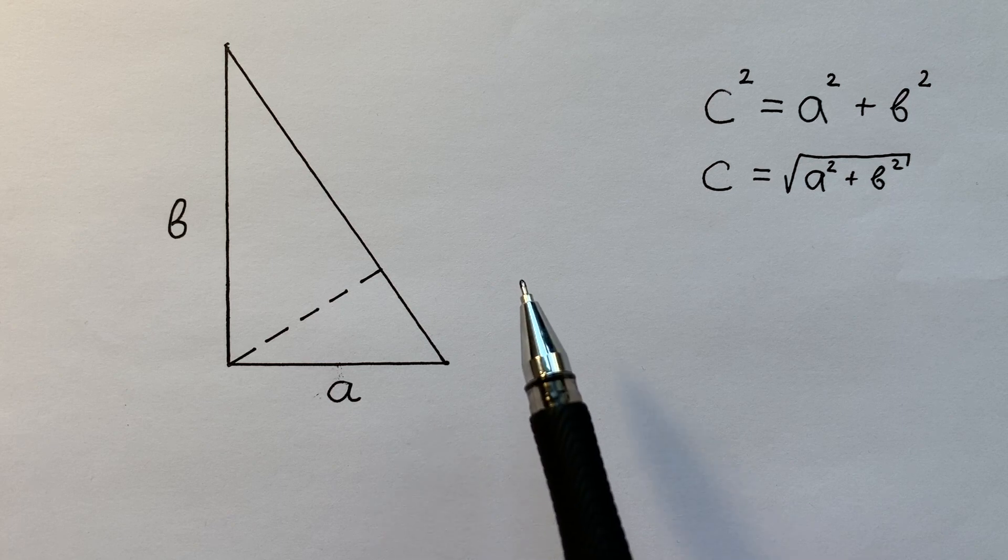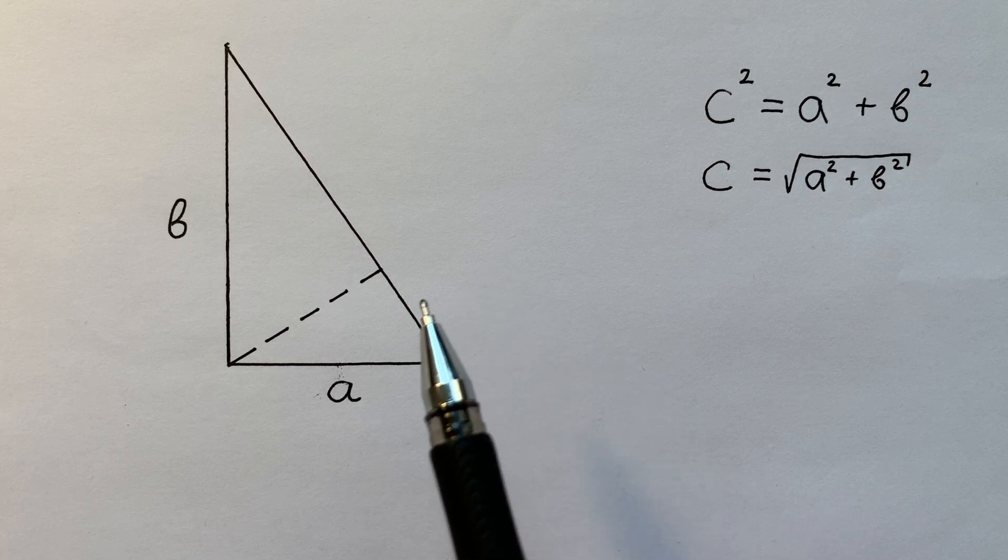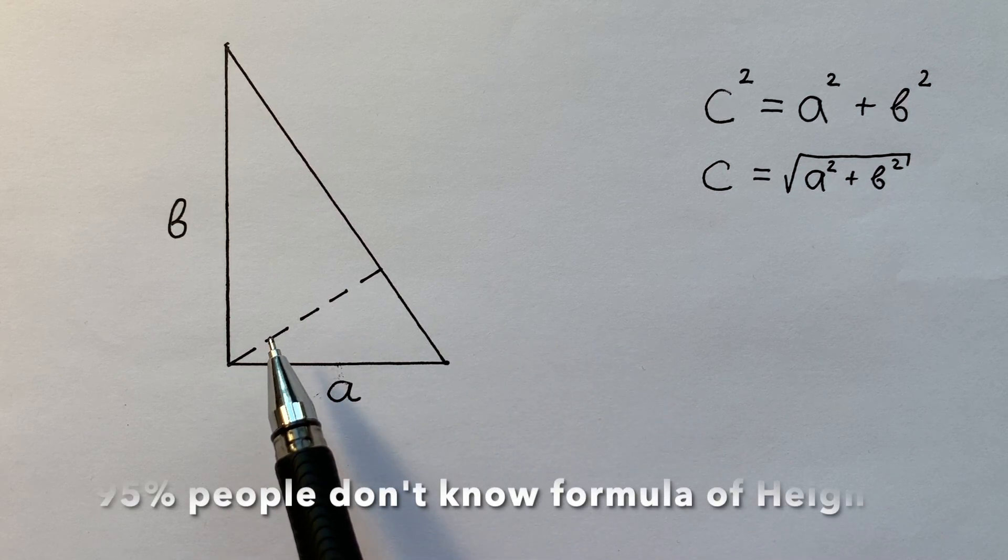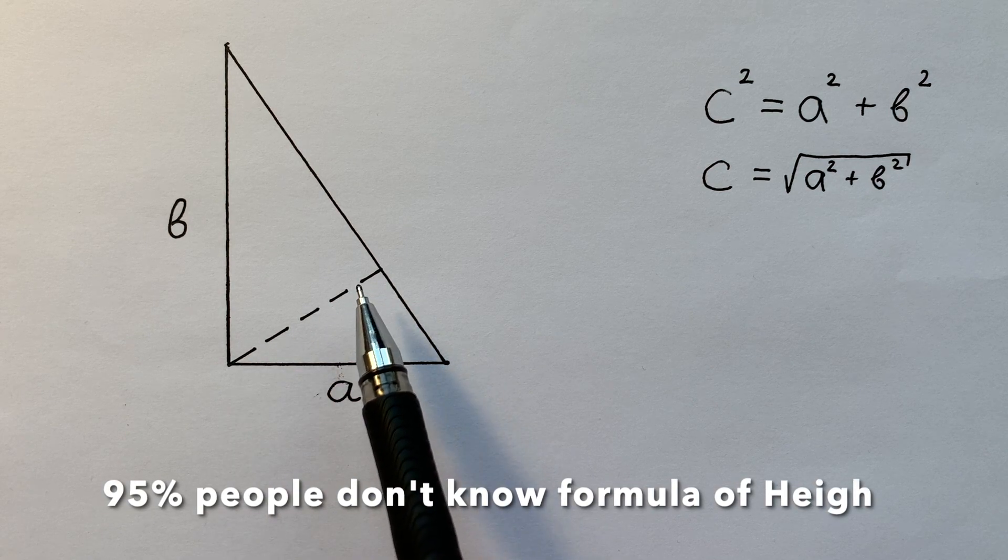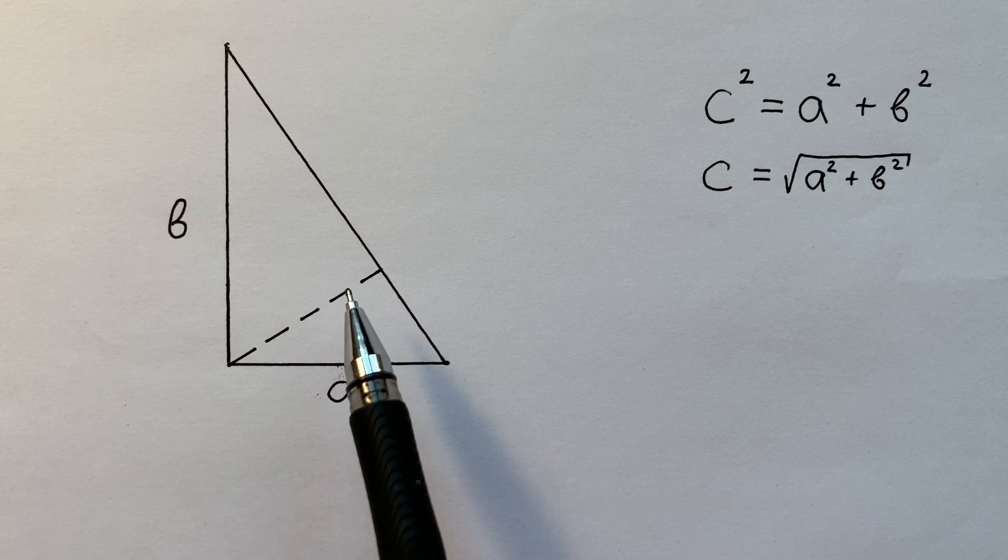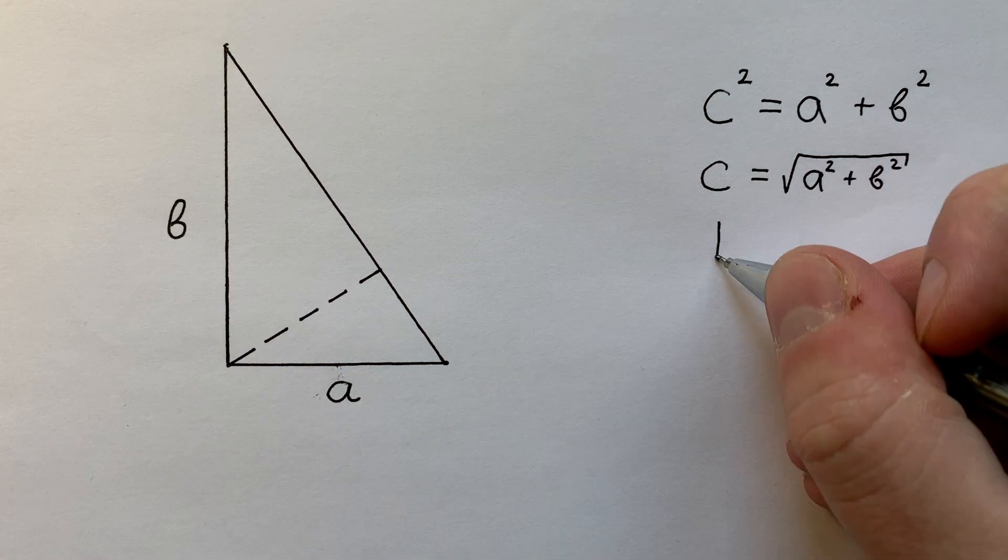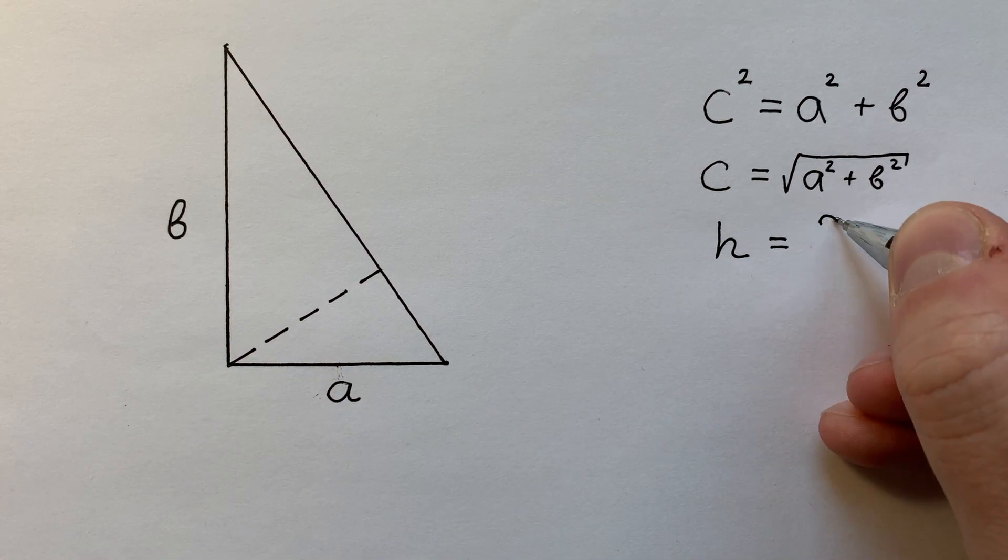But I can firmly say that most people can't write the formula of H, the height of a right triangle, using only A and B. So what is the formula for H?